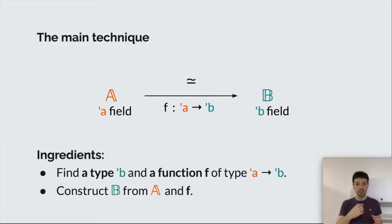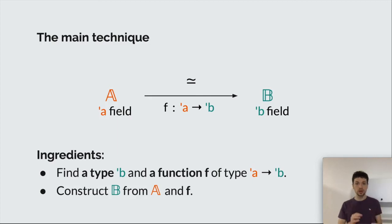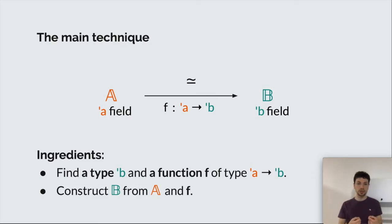The main tool in the proof sketch was this idea of changing the underlying type of an algebraic structure using a function from one type to the other. I want to express this idea because it is simple and can be used in other scenarios. There are two ingredients for this to work. First, we need to come up with a type B and a function F from type A to B. In the proof sketch, this type B was the type of multivariate polynomials, and the function F was the evaluation of these multivariate polynomials.